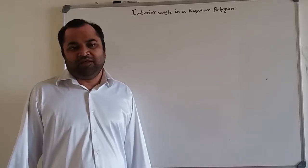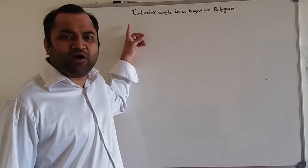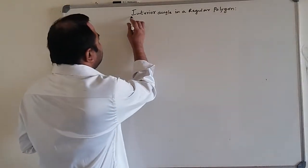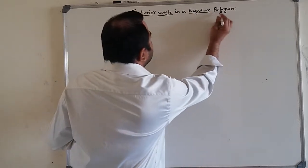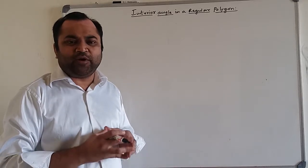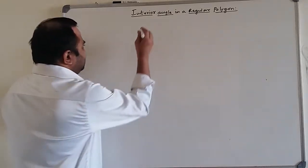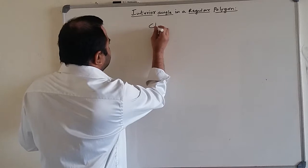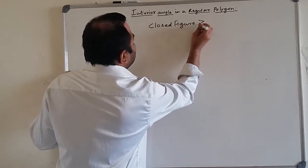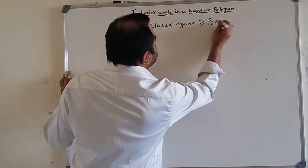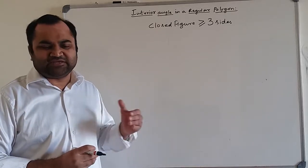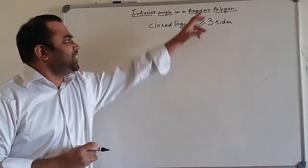Welcome. This video is about the formula for finding each interior angle in a regular polygon. First of all, what is meant by a polygon? A polygon is a closed figure having three or more sides, which means starting from triangles, closed figures can be called polygons.